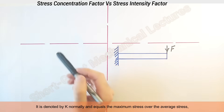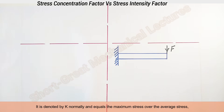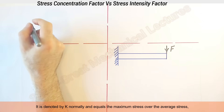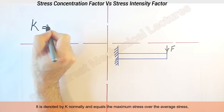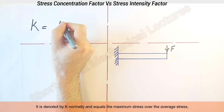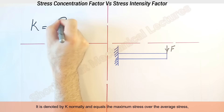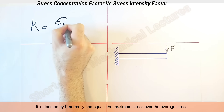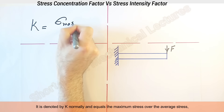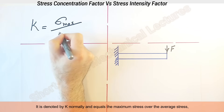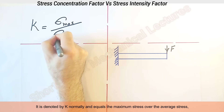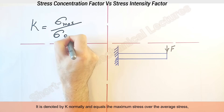It's denoted by K normally and equals the maximum stress over the average stress.